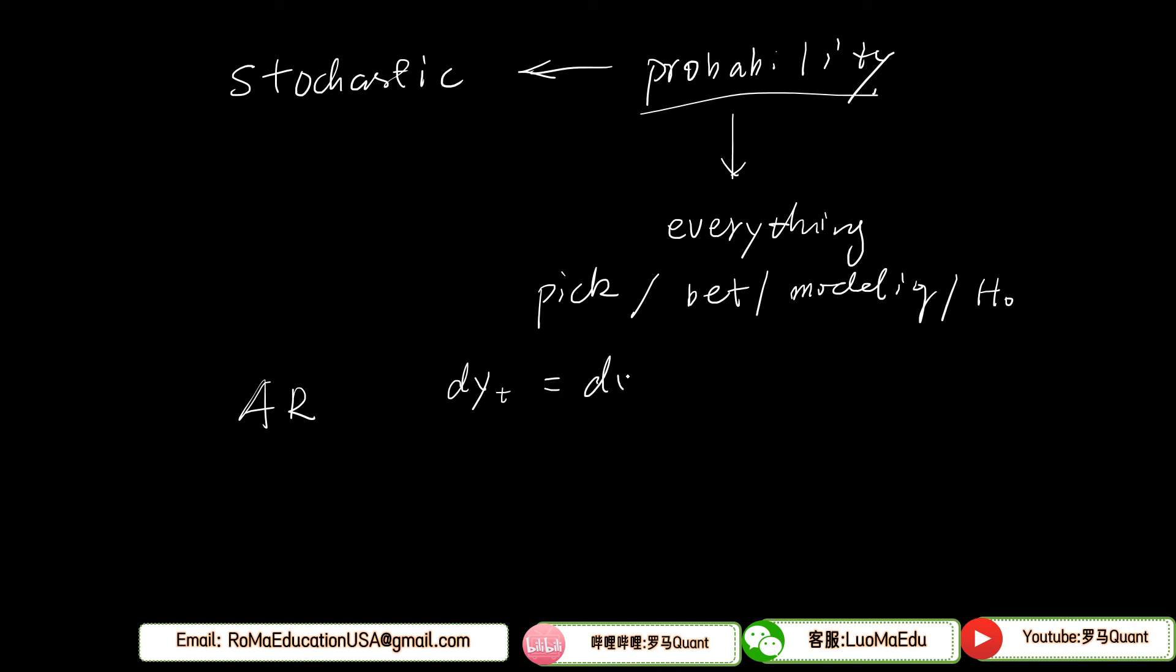For example, if we're modeling autoregression like dy(t) = some number times dy(t-1), this is an autoregression problem.